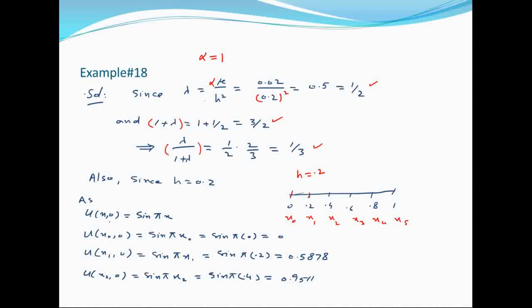Initial condition t=0 पर calculate करते हैं। Initial condition: u(x, 0) = sin(πx)। अलग-अलग x points पर values निकालते हैं: x₀=0 पर sin(π×0), x₁=0.2 पर sin(π×0.2) calculate करेंगे।